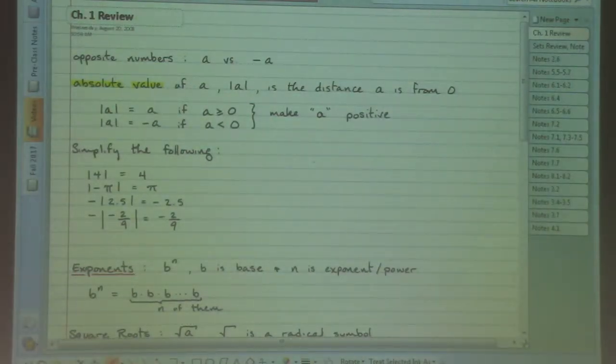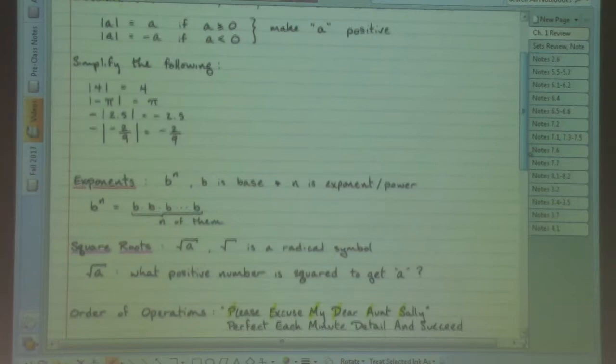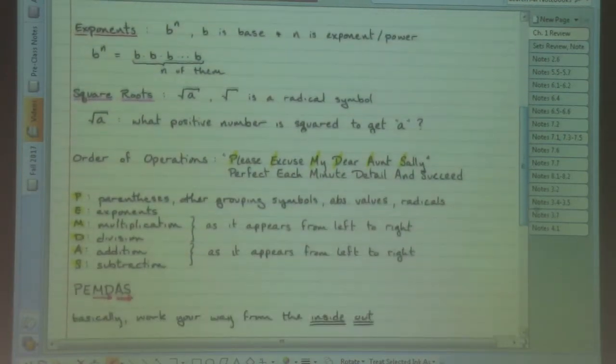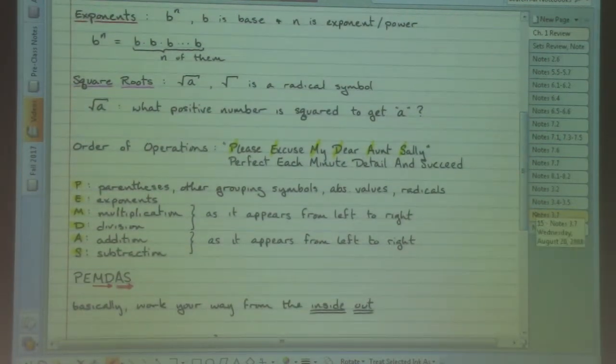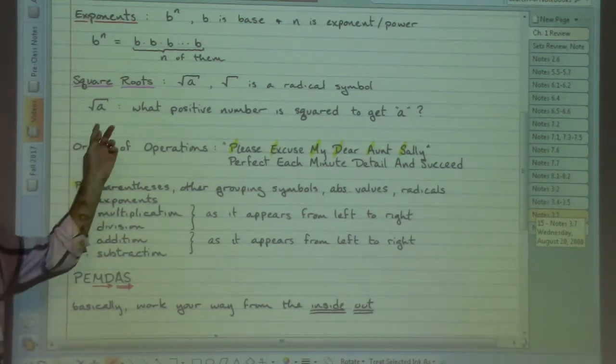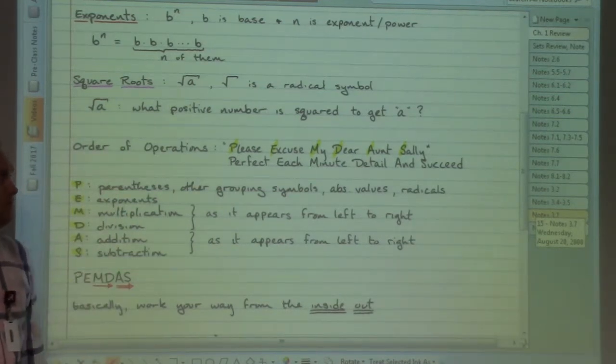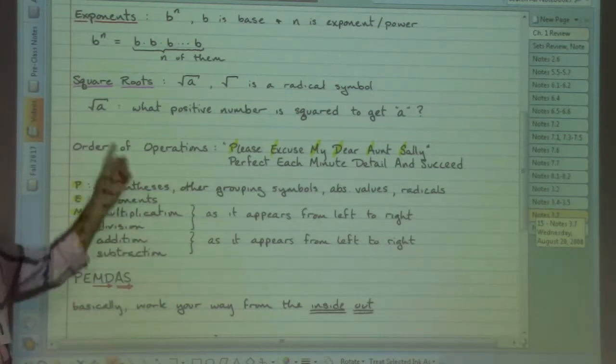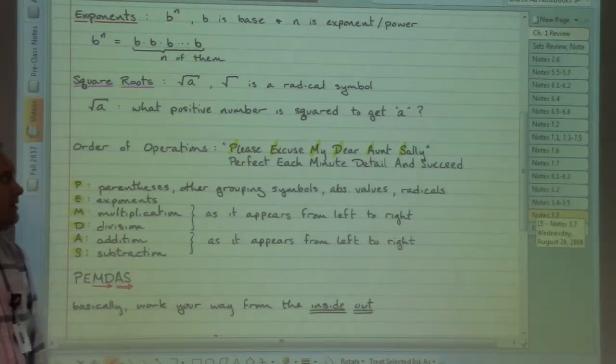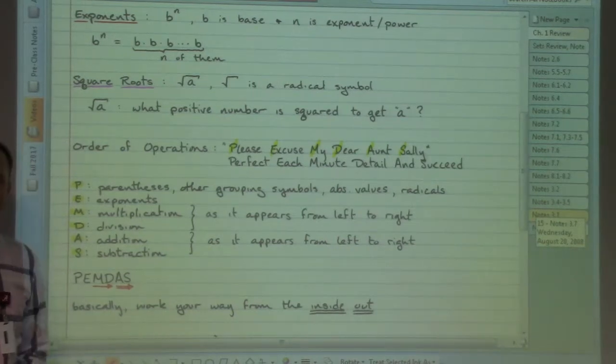Continuing on, quick reminder as well about square roots. Essentially, we can ask ourselves what positive number do we square in order to get whatever number is underneath. We can also use the calculator at this stage to work that out.